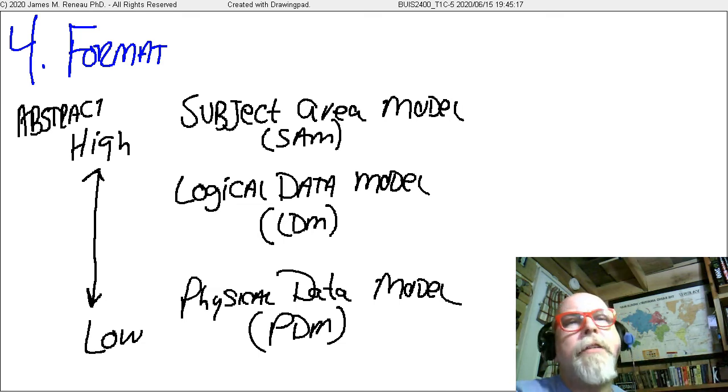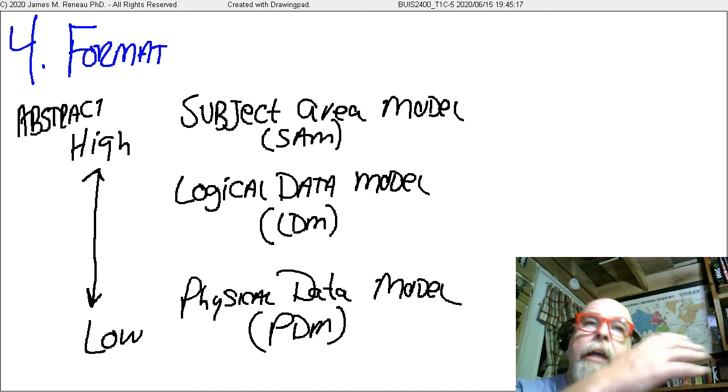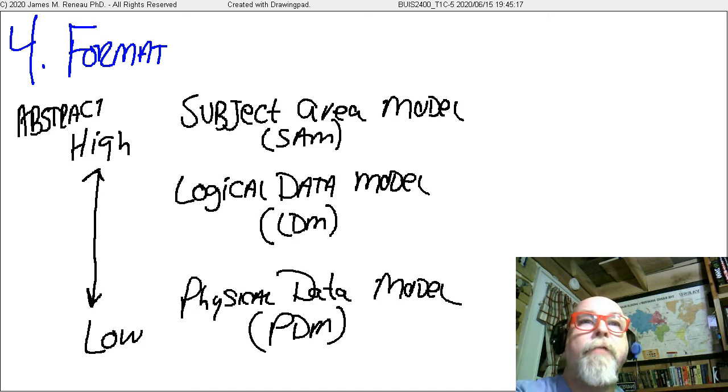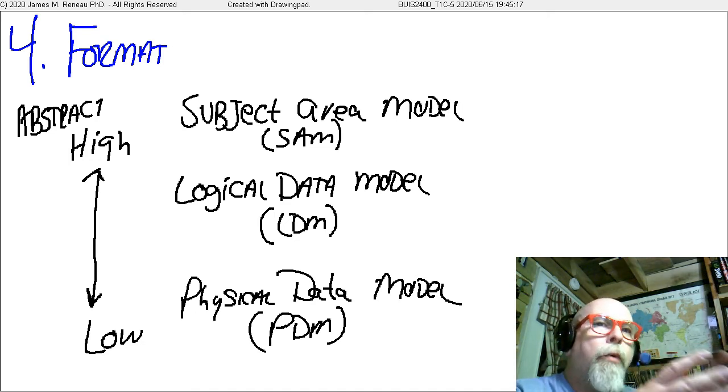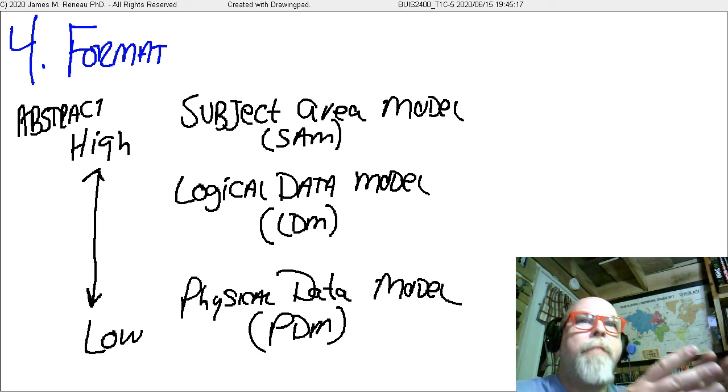And then the physical data model, which is the lowest level of abstraction of the three types of models, the three formats of models, is actually how we're going to create it in the database system, how we're actually going to implement it in the database system. So it would be the least abstract because this is how we're actually going to build the real thing.